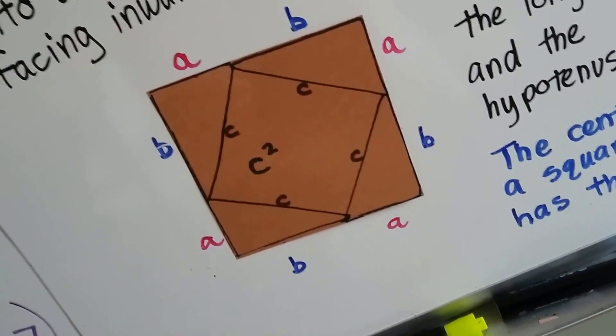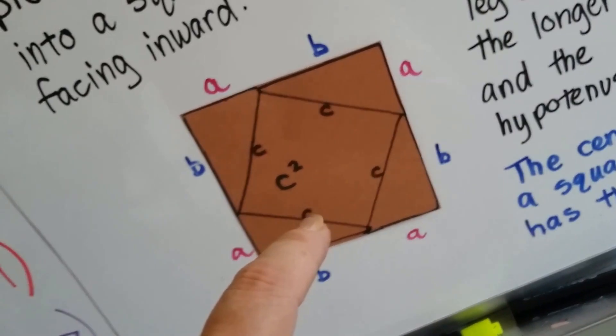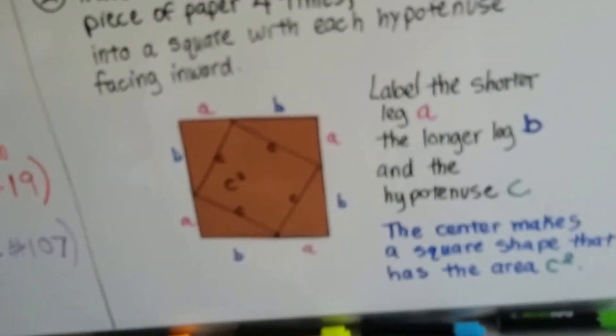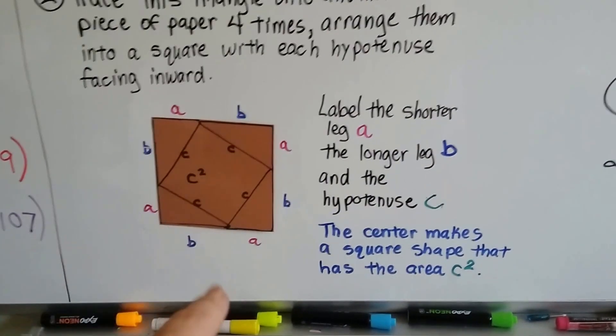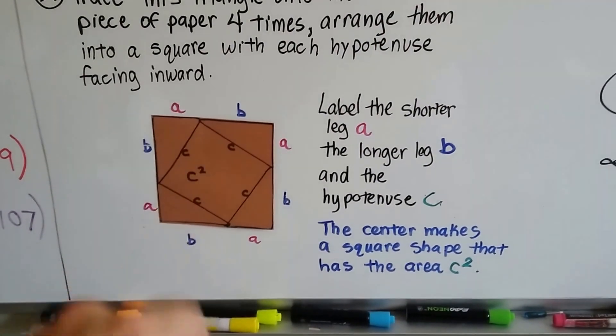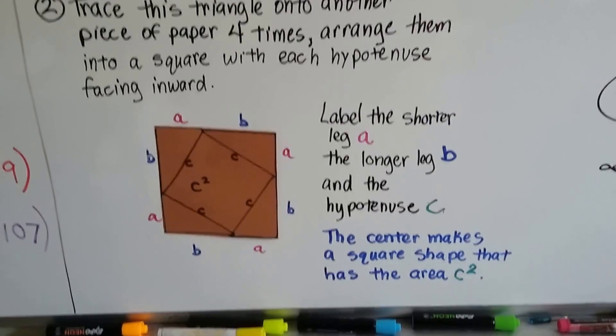And to find the area of this, it would be C times C. It would be this side times this side, C squared. We've labeled the shorter leg A, the longer leg B, and the hypotenuse C. And the center makes a shape that's a square, and it has the area C squared.